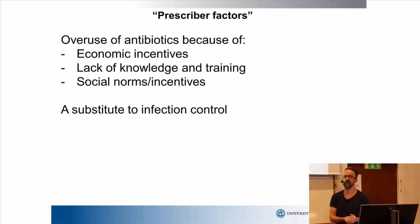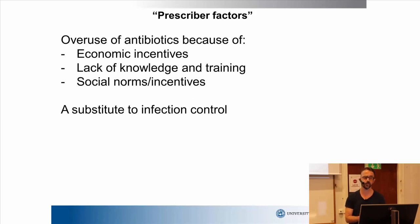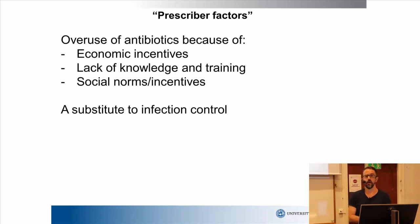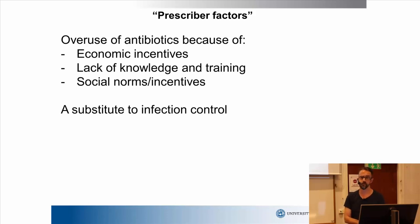Third, doctors aren't always good — they can also be the culprit. There might be prescriber factors to consider. There may be economic incentives for doctors to over-prescribe antibiotics — incentive systems that reward antibiotic use, or seeing it as a quick fix to avoid repeat patient visits. Doctors might not have sufficient information about certain settings. And it might be difficult for doctors when they face social norms that push them in one direction. The use of antibiotics is also, of course, a substitute for infection control.